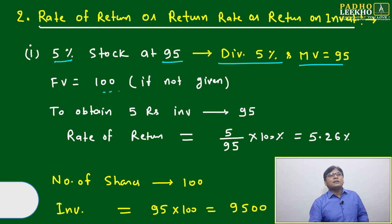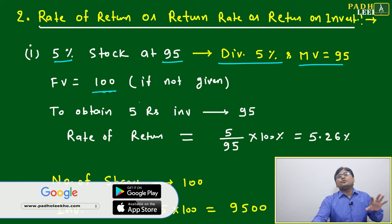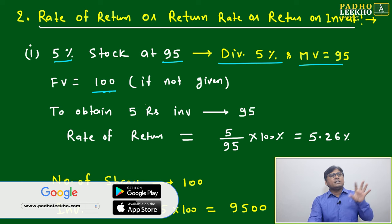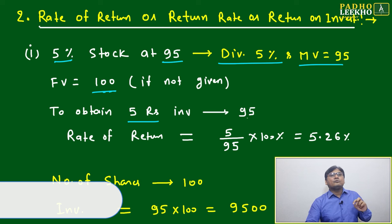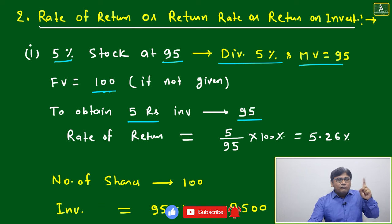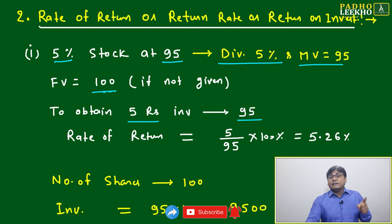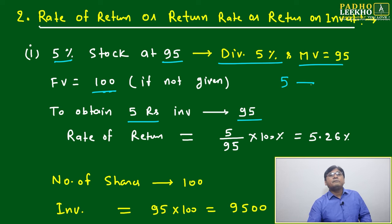If the face value is not given, just assume it is 100 — there is no problem. Now, to obtain five rupees, you have to invest 95 rupees, because at five percent dividend, every share gives you five rupees. That is the meaning of dividend — five rupees every share.